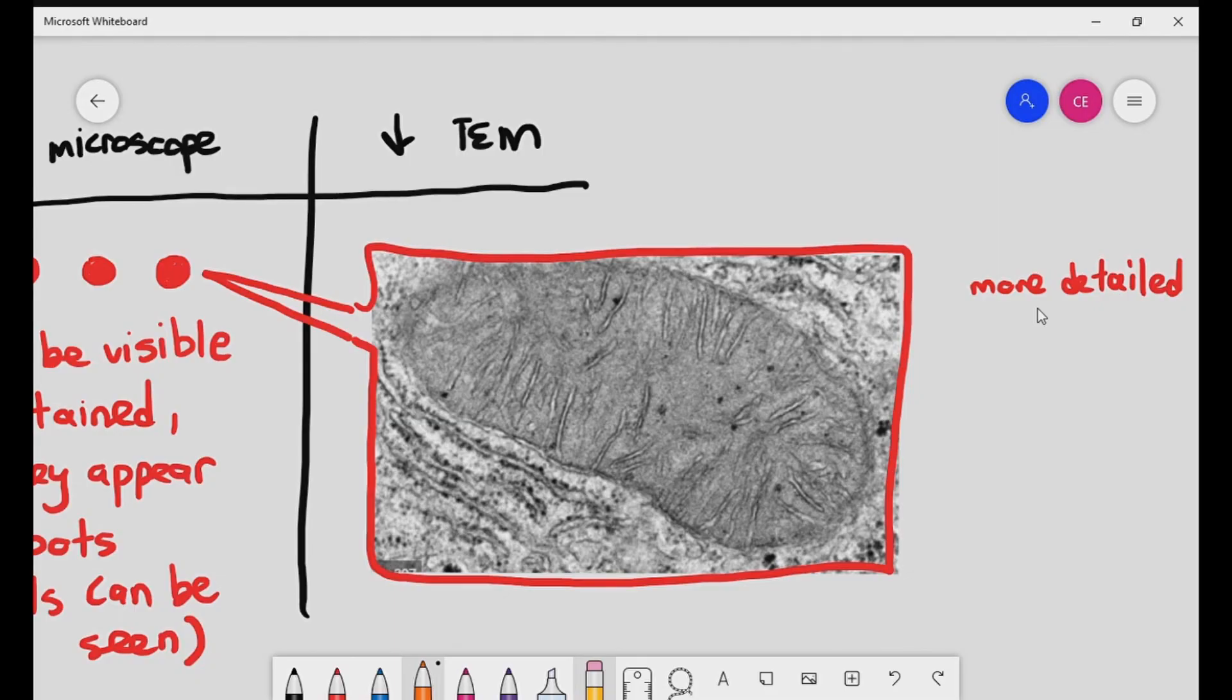Again, we often remember that the electron microscope can give us a better resolution. Visible in the transmission electron microscope is the outer membrane, the folded inner membrane, so we can see a more detailed image of the mitochondrion, and also the matrix which is the space inside the mitochondrion.